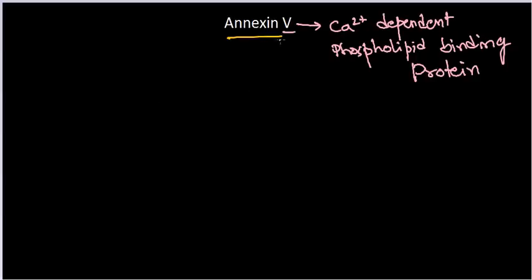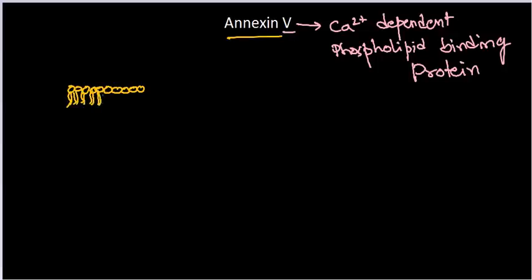Annexin has a tendency to attach to phospholipids, and we know phospholipids are the integral part of cell membrane in all cells, because cell membrane is produced by the phospholipid bilayer. So if I draw a cell membrane, let us draw carefully. These are the phospholipids — phospholipids have two different regions: one is a hydrophilic head and hydrophobic tails coming down. So this is the outer layer and this is the inner layer of the phospholipids.